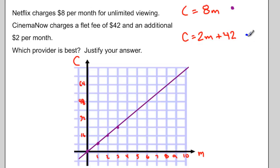I'll use blue for CinemaNow. CinemaNow is a little bit more expensive, charges $42. So maybe a starting point about there. And it goes up $2 every month.